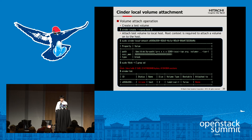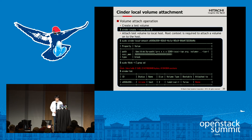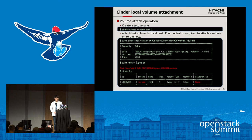Here is the result of Cinder local volume attachment. First, the user creates a test volume and then runs Cinder local attach with the volume ID. The volume is recognized as a block device. The user can see the volume as /dev/sdb. When the user runs the REST command, the volume status changes to in-use, but the 'attached to' field is unknown because the target server is bare metal and not provisioned by Nova.